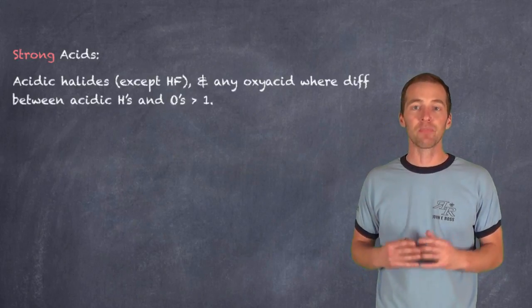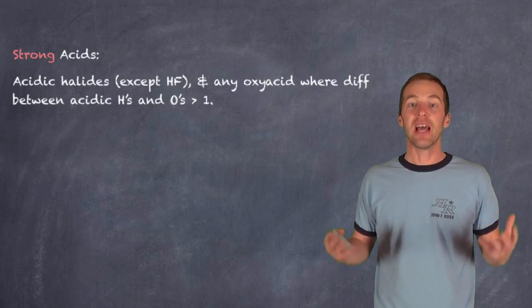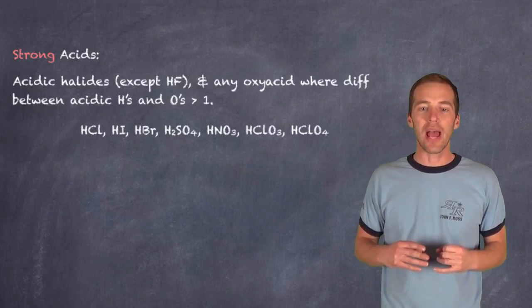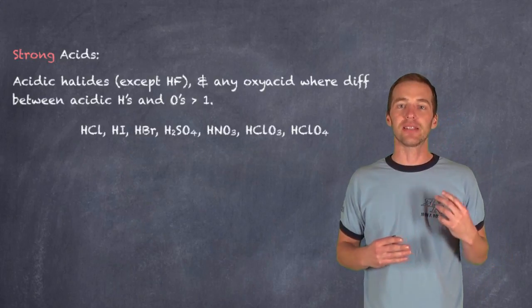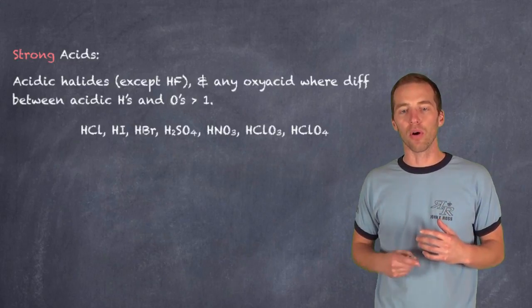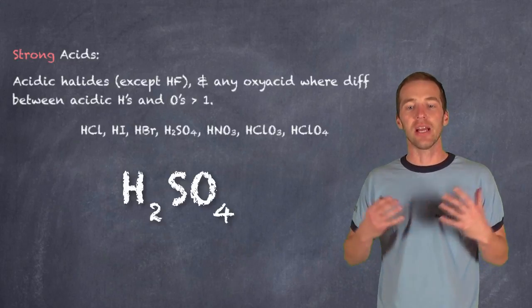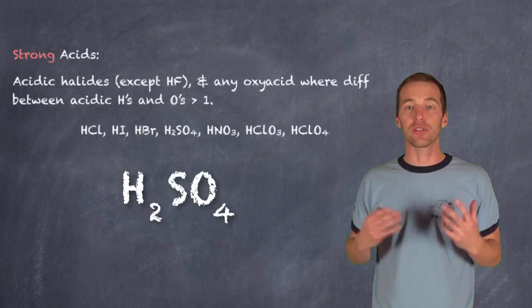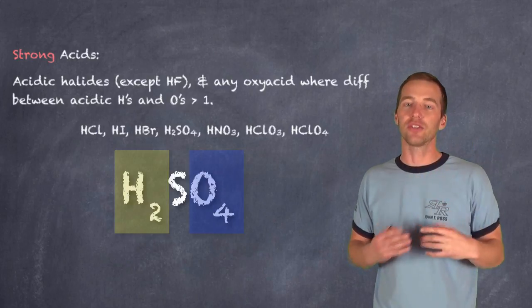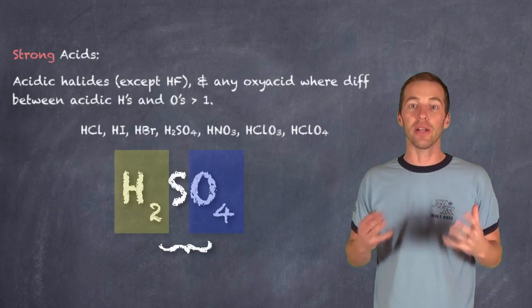And any oxy acid, that is an acid that contains oxygen, is considered a strong acid if the difference between the acidic hydrogens and oxygens is greater than one. That is, it's two or more. So, if we take a look at, say, sulfuric acid, you will notice that sulfuric acid has two acidic hydrogens and four oxygens. So, the difference is greater than one. It's two.